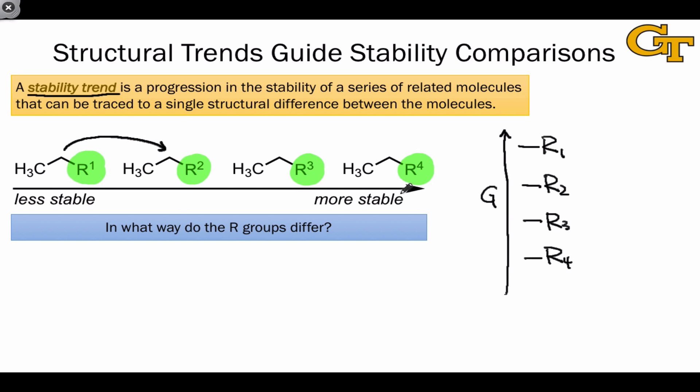Notice that given an understanding of this trend, we can draw a conclusion about whether the reaction that converts, for example, the R1 containing molecule to the R2 containing molecule is thermodynamically favored or not. In this case, it is. On the other hand, the conversion of the R3 containing molecule to the R2 containing molecule, which would involve an increase in free energy based on this trend, is disfavored.